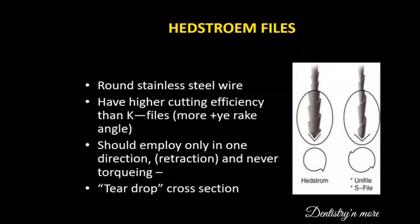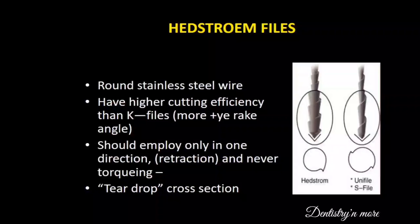Hedstrom files are made from round stainless steel wire. They have higher cutting efficiency than K-files — that is, a more positive rake angle — but should be employed only in one direction, that is retraction, and never with a twisting motion. They have a teardrop cross-section.